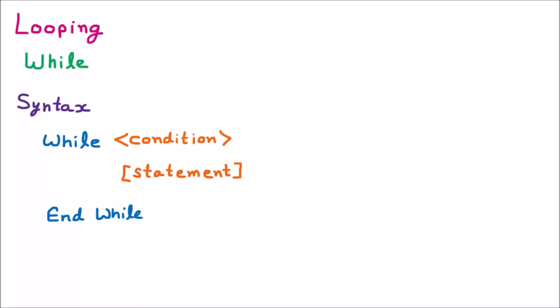We are learning the while loop, which is part of looping. Whenever we have to repeat something, looping comes in. For example, if we want to print a number five times, we will not write the statement five times — we apply looping. Inside looping we have while, do-while, for, do-until, and other loops that help us perform repetition.